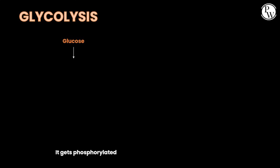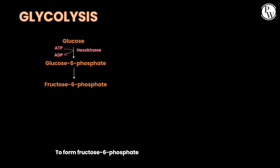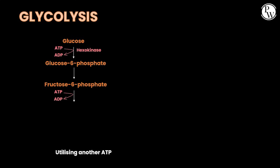In glycolysis, glucose gets phosphorylated utilizing an ATP, via hexokinase, forming glucose-6-phosphate, which further undergoes isomerization and forms fructose-6-phosphate, which again gets phosphorylated utilizing another ATP, forming fructose-1,6-bisphosphate.